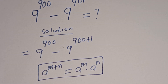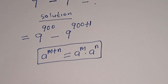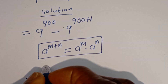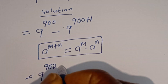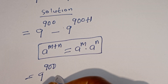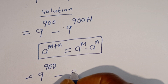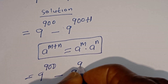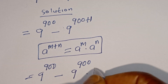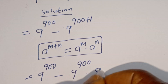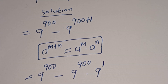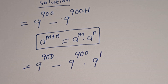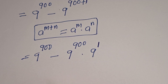Then this can be written as 9 to the power of 900 minus 9 to the power of 900 multiplied by 9 to the power of 1. Now, if you look at this, 9 to the power of 900 is common. Let's bring it out.